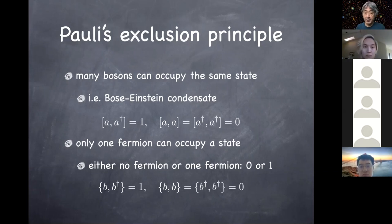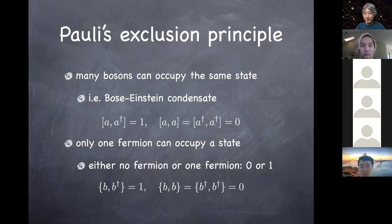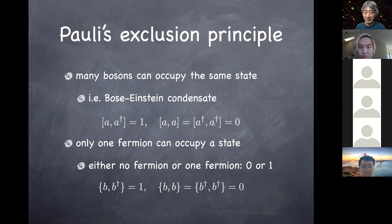I haven't explained yet why this makes sense — that comes on the next slide. But this is basically how we describe fermions using creation and annihilation operators, and eventually in terms of quantum field theory. This is a brand new algebra of creation and annihilation operators — let's see if it works out.